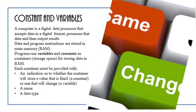Now, what are constants and what are variables? We know what a computer is. A computer is a machine that processes and accepts data in digital format and then outputs results. Data and program instructions, we should know from our earlier lessons in your first and second form classes, are stored in what is called the main memory, also known as ROM, random access memory. Now, these programs use what are called variables and constants as containers. And these containers are storage space within your computer for storing the data in ROM.